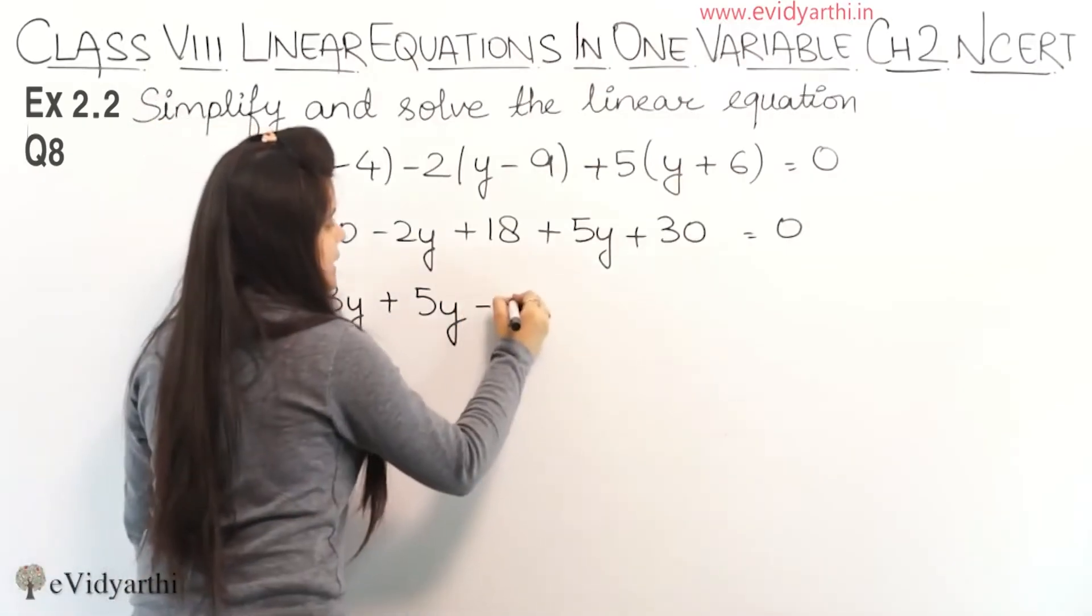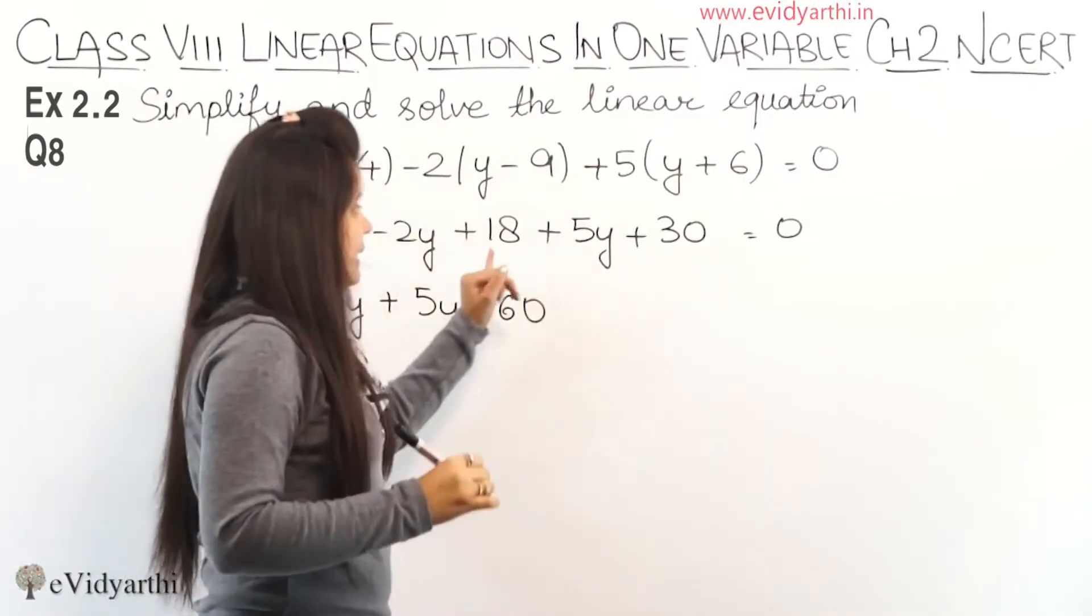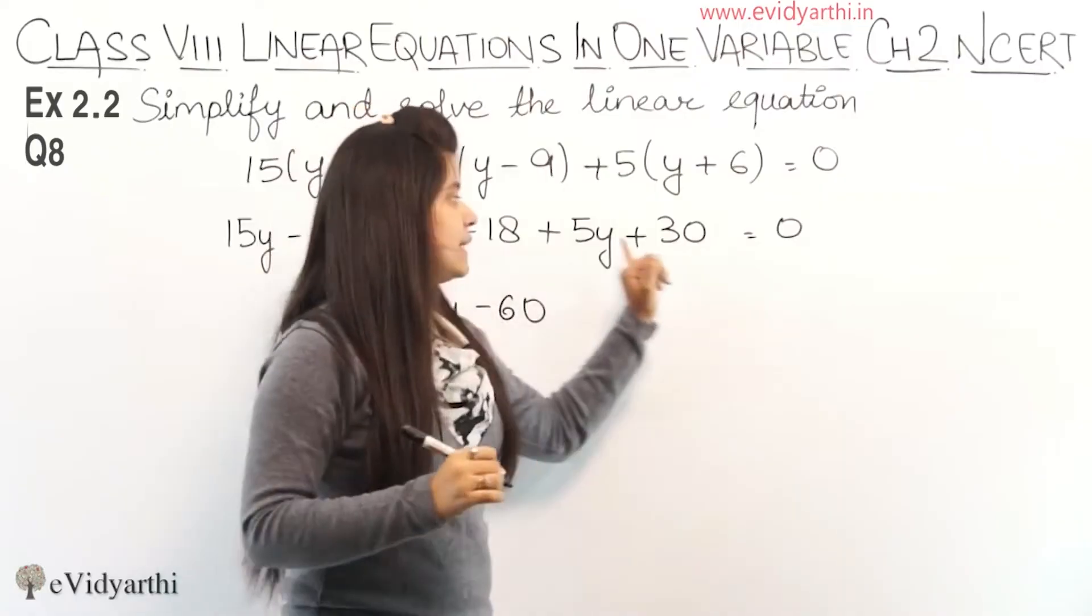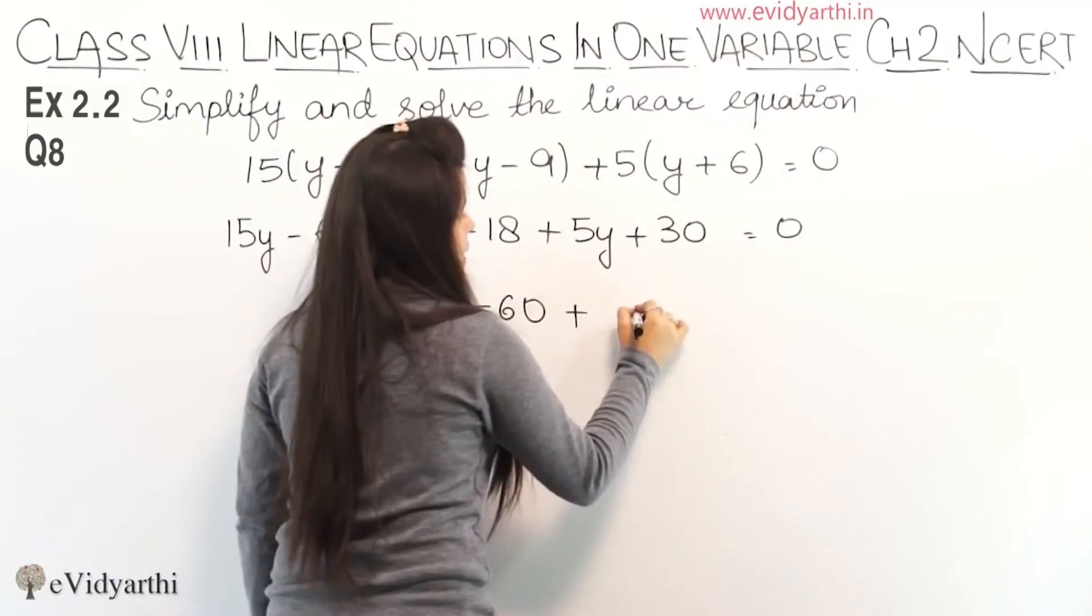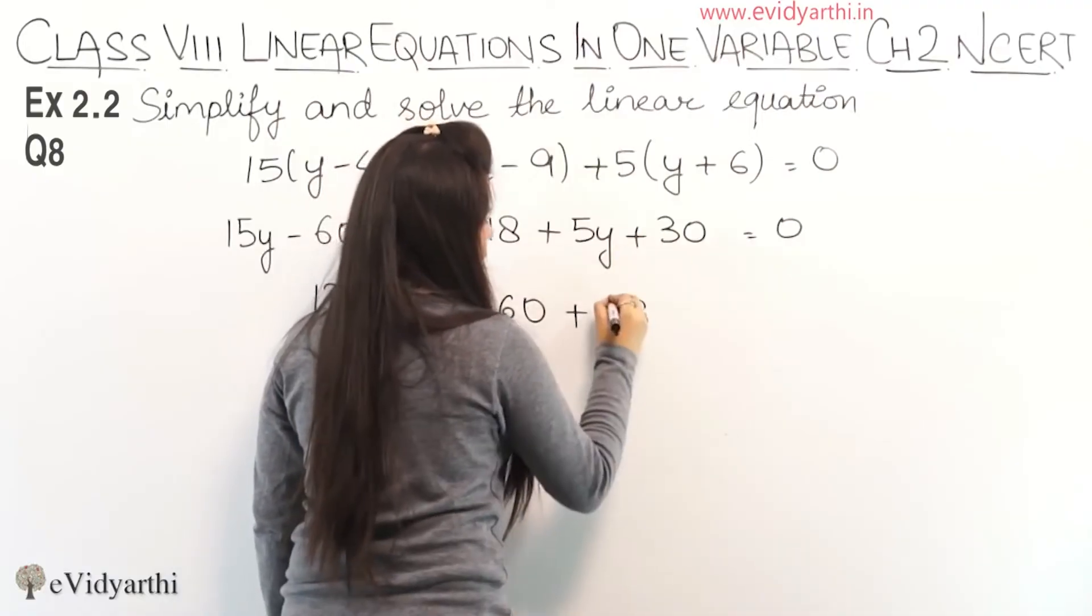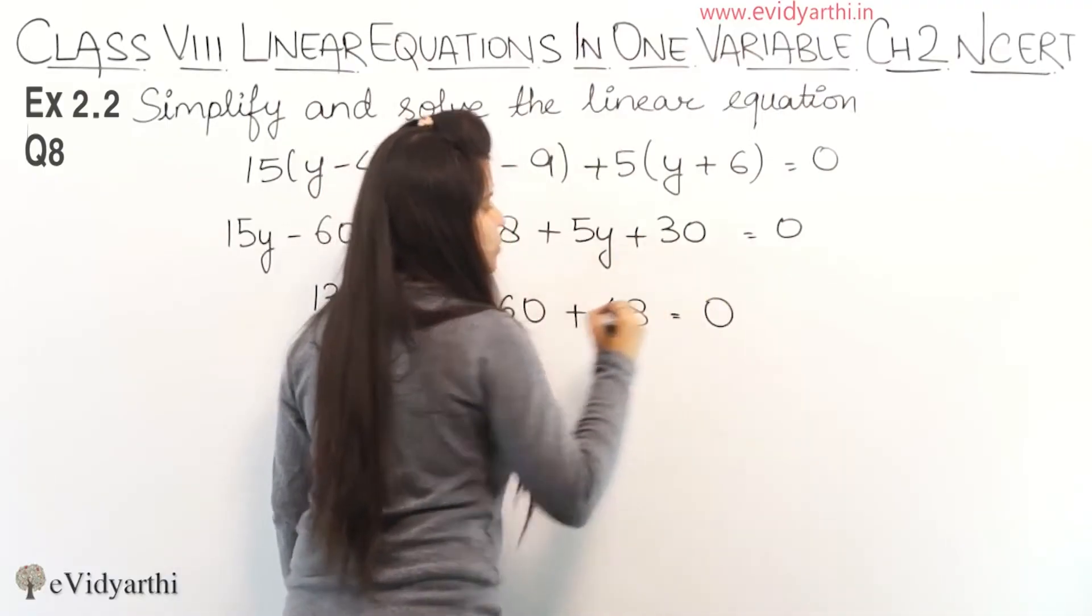Then minus 60, let's write it as is. And here we have plus 18 and plus 30. Plus plus gives plus. We will get 18 plus 30: 8 plus 0 is 8, and 3 plus 1 is 4, so 48, equals to 0.